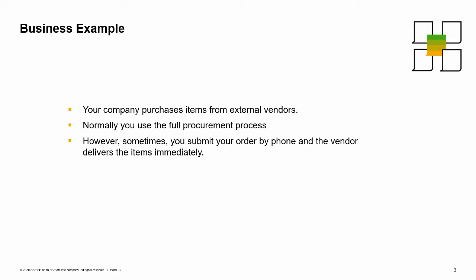You submit your order by phone and the vendor delivers the items immediately. For the expedited process, you do not use the full purchasing process. Instead, you use just one purchasing document to keep the process as simple and quick as possible.